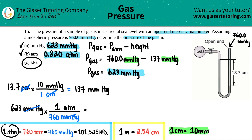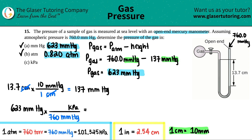For kilopascals, use the relationship 760 mmHg = 101.325 kPa. So: 623 mmHg × (101.325 kPa / 760 mmHg). The millimeters of mercury cancel, leaving kilopascals. 623 × 101.325 ÷ 760, to three significant figures, equals 83.1 kPa. That's part (c).